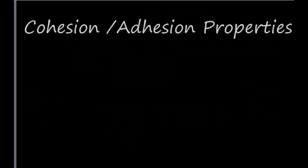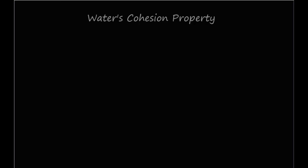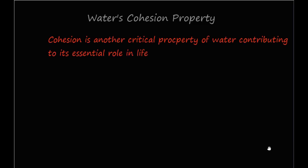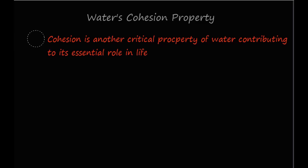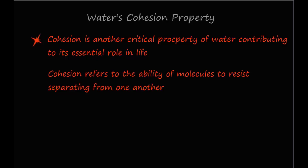This next property of water involves two effects referred to as water's cohesion and adhesion properties. These properties contribute to the uniqueness of water in biology. While these properties are somewhat similar, they are also quite different from one another. Cohesion refers to the ability of molecules to resist separating from one another. You have probably observed this property many times. Examples include the water of a river or lake parting as a water skier carves a path behind a speedboat.